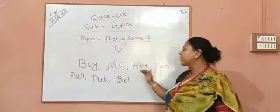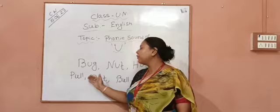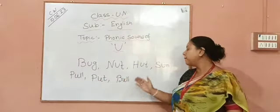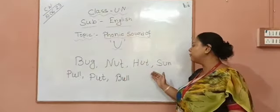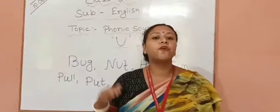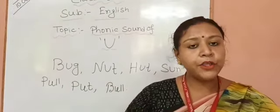And if we take the words like pull — P-U-L-L, pull — P-U-T put, B-U-L-L bull. Here the sound of U is 'oo'.